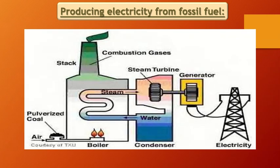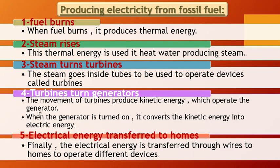Let's review the picture: first we have coal, we burn it to get thermal energy. The thermal energy boils the water to produce steam or water vapor. The steam makes the turbine move. The turbine is connected to the generator, so the generator moves, consumes the kinetic energy, and produces electrical energy, which is then transferred to our homes.